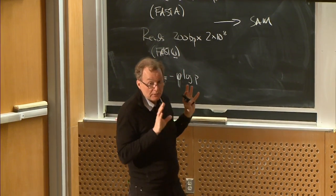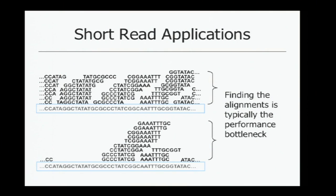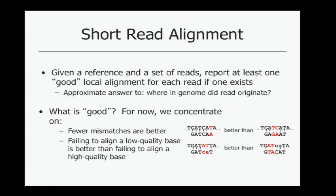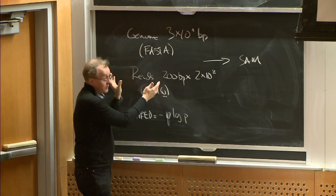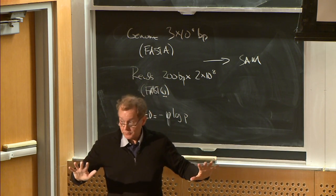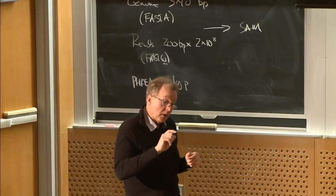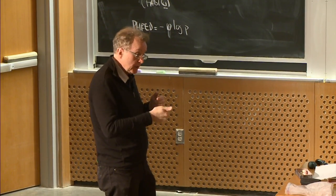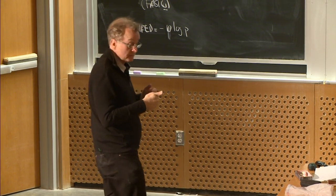Finding this alignment is a performance bottleneck for many computational biology problems today. A good alignment means fewer mismatches are better, and we prefer aligning to high-quality bases. We have quality scores for the reads; we begin with the assumption that the genome is the truth, so we are more permissive of mismatches at read positions that have higher likelihood of being wrong.